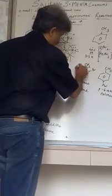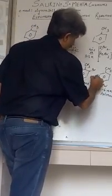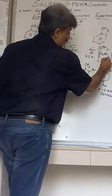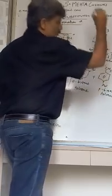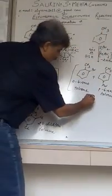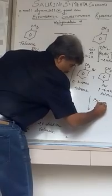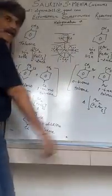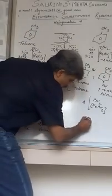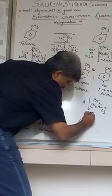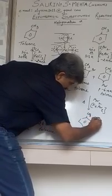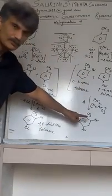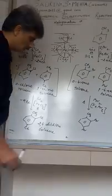You get a mixture of ortho and para bromotoluene. The 2 hydrogen atoms leave as protons and combine with 2 Br minus to form 2 moles of HBr as a byproduct. If you further perform bromination with the same catalyst FeBr3 and heat the reaction mixture, both the 2 and 4 positions are substituted with Br, giving you 2,4-dibromotoluene.